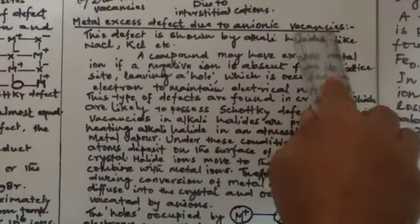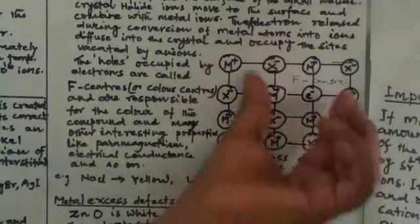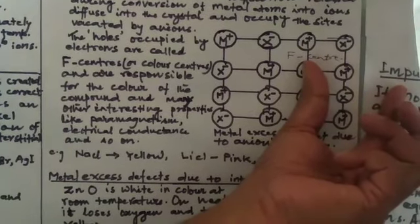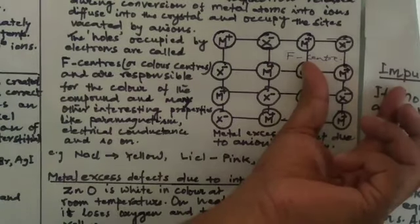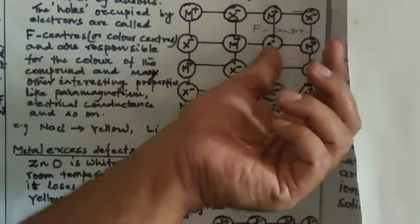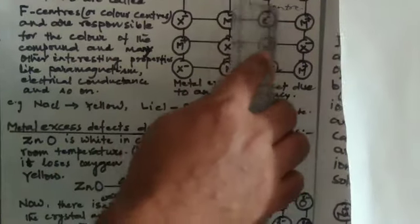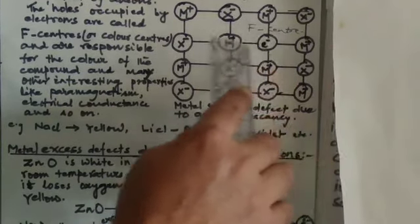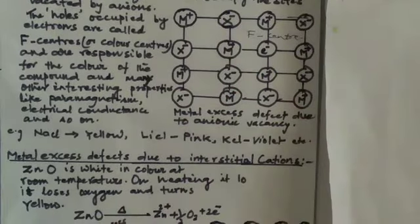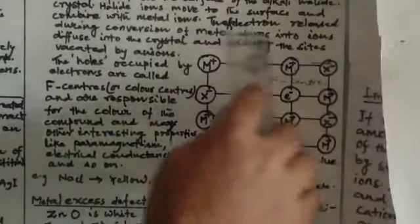To summarize metal excess defect due to anionic vacancy: when alkali metal halides are heated in the presence of alkali metal vapour, the anion leaves the lattice site and moves to the surface, where it combines with the cation formed by the metal atom releasing an electron. M is first converted to M⁺, leaving one electron that rushes through the crystal and occupies the lattice site vacated by the anion. This site inside the crystal where the electron is trapped is called F-centre, and because of this colour centre, alkali metal halides impart characteristic colour on heating. The crystal also shows paramagnetic character and N-type semiconductance.